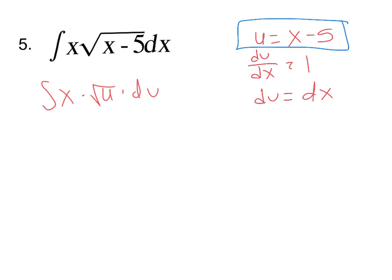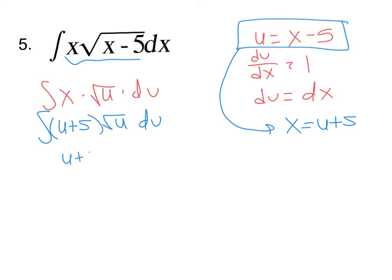Look back at that first line. u equals x minus 5. So what does x equal then? x equals u plus 5. So I'm going to substitute that in. u plus 5 times the square root of u du. Now, is that much different than what we started with? Not terribly. However, that is helpful. Because what can I do with this u that I couldn't do up top? This is u plus 5 times u to the 1 half. If I distribute u to the 3 over 2 plus 5u to the 1 half du.